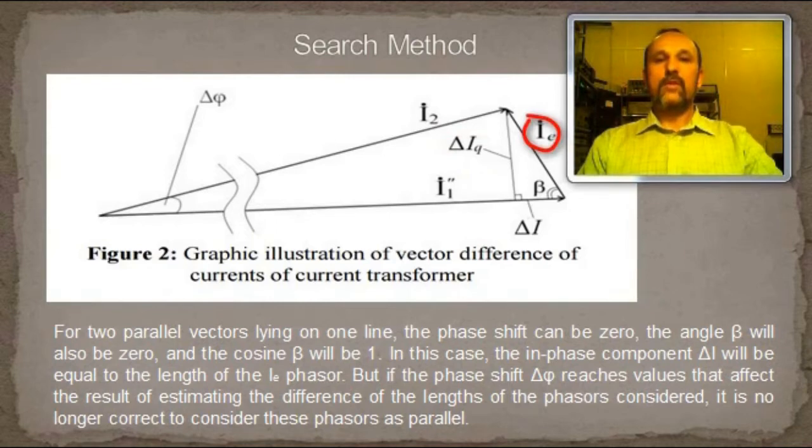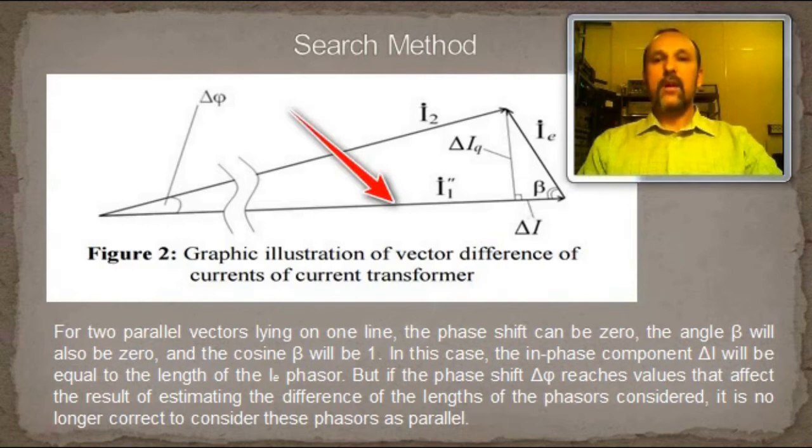In the work, ratio error values were calculated both for the case of non-equality of the amplitudes of both secondary currents, see figure 1, and for the approximation of these characteristics by the projection of the exciting current phasor onto an axis drawn through the phasor of the reduced primary current.